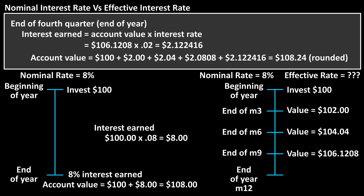So the account now has the $100 original investment, plus the $2 of interest from Q1, plus the $2.04 from Q2, plus the $2.0808 from Q3, plus the $2.122416 interest earned at the end of the fourth quarter. And the total in the account is now $108.24 rounded off.